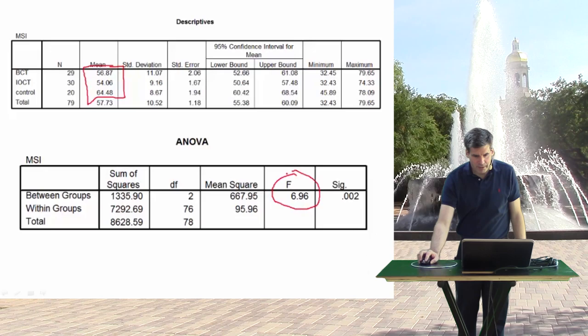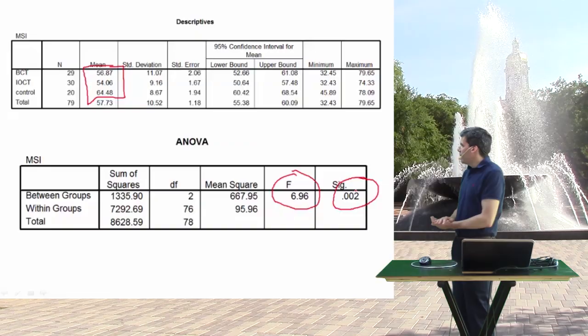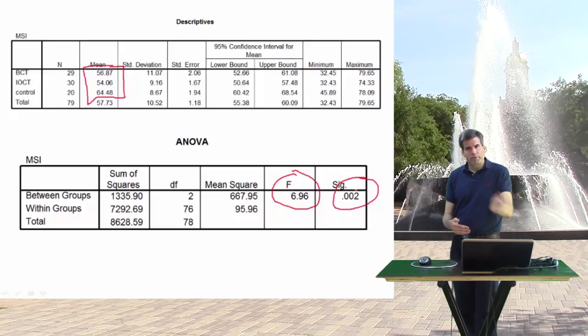We had an F of 6.96. Our p-value is less than 0.05, and that is significant. So that is the omnibus question: overall, is there a difference between groups?